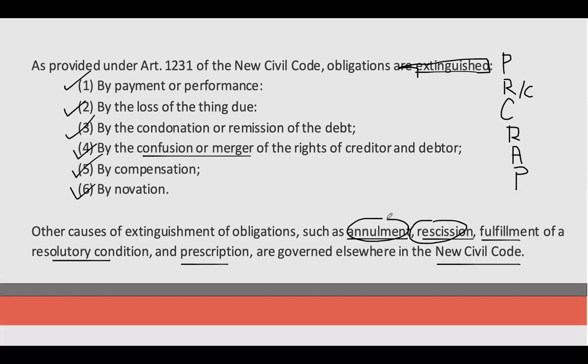So kung nag-file ng annulment — alam nyo naman yung mga annulment cases sa marriage — the marriage will remain to be valid until it is annulled. So marriage again is a contract. So kung napa-annul na yung kontrata, then declared void na rin po. So wala ka ng obligasyon doon sa marriage. Pero hindi lang marriage ang may annulment — even other contracts pwede mong ipa-annulment yung contract, say for example if there is a fraud.